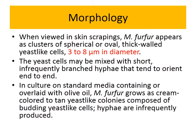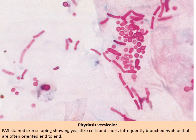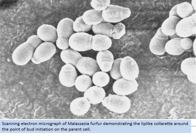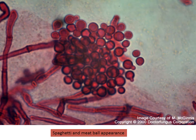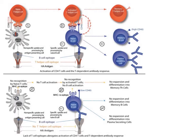Under the microscope, pityriasis versicolor from skin scrapings shows branched hyphae. On electron micrograph you can see budding taking place. The characteristic appearance is what we call the 'spaghetti and meatball' appearance - this is a very common exam question and an important feature of Malassezia furfur. There are some immunology slides you can read on your own about how the immune response would deal with this organism.